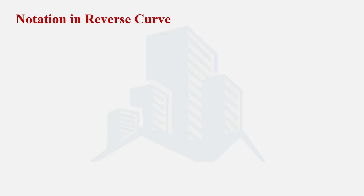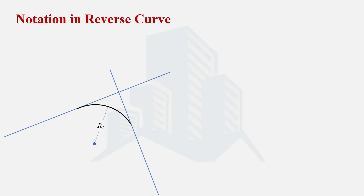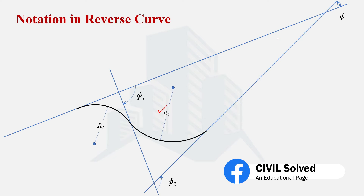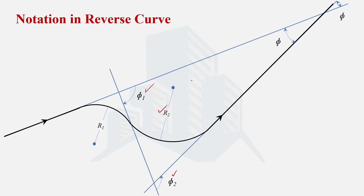Now let's talk about the notations in a reverse curve. We have an existing route where, because of some obstruction, we change direction by providing a horizontal curve with radius R1, having a backward tangent and a forward tangent, and a deflection angle for this first curve. We then provide another curve with a different radius and a different deflection angle. If you extend the backward tangent of the first curve and the forward tangent of the second curve, the angle formed is the total deflection angle of the reverse curve, which is the difference of the two individual deflection angles.